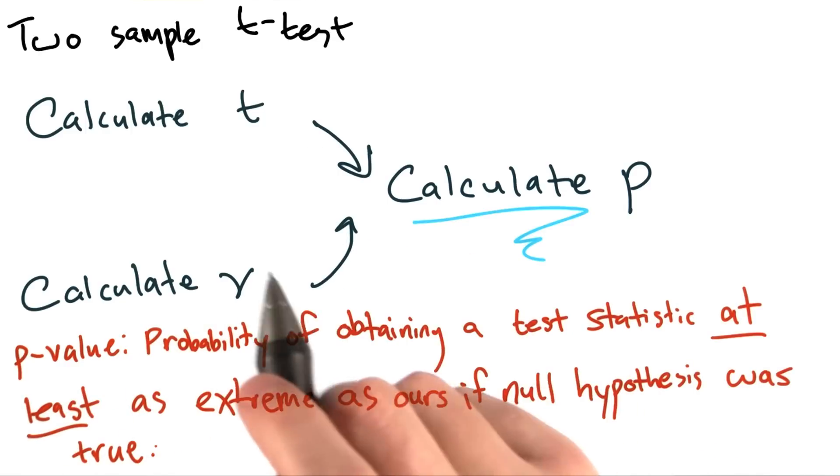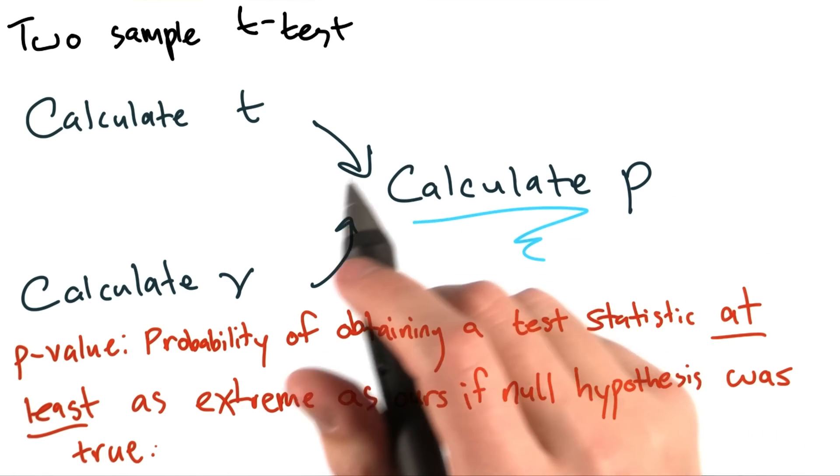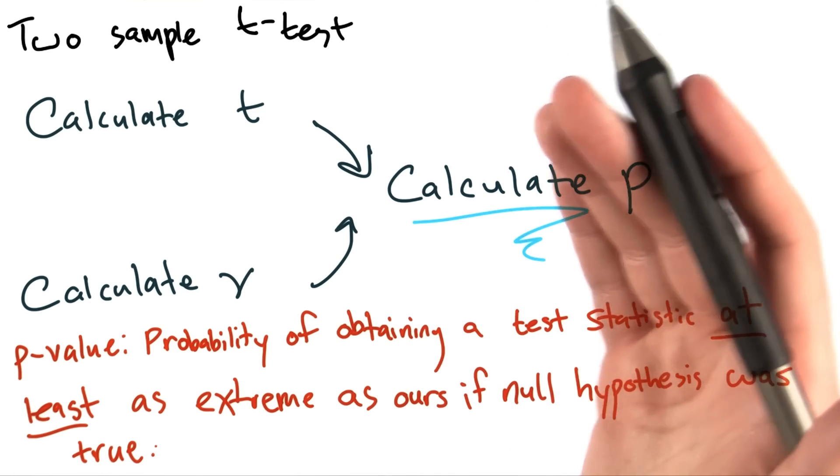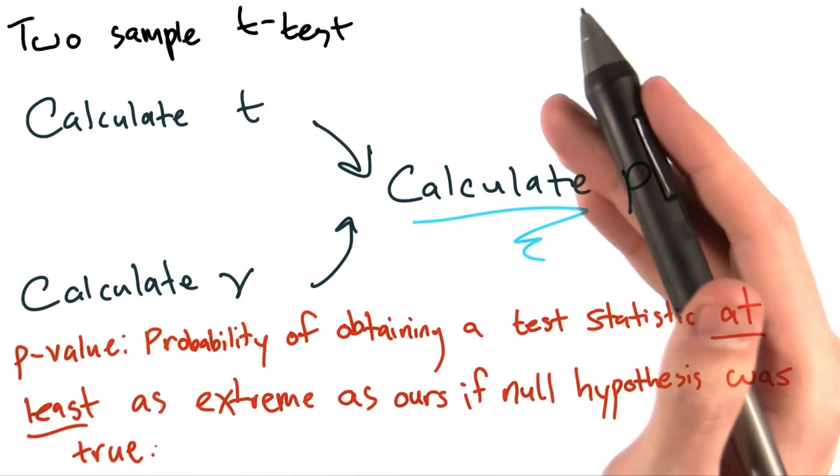So again, just as a thought experiment, say we were testing whether left-handed or right-handed baseball players were better batters by looking at their average batting average.